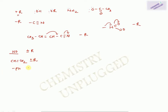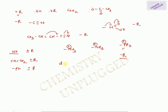Certain groups cannot show any type of resonance. For example, –NH₃⁺ will not pull electrons. Similarly, –NR₃ will not pull, but –PR₃⁺ can pull electrons because phosphorus has empty d-orbitals and can accept electrons, so it shows minus R effect. Species having empty d-orbitals and empty p-orbitals can show minus R effect.